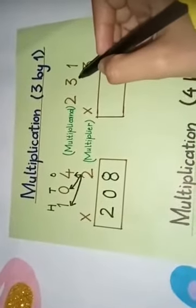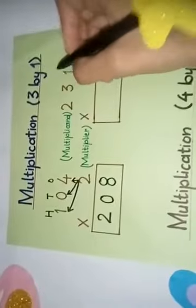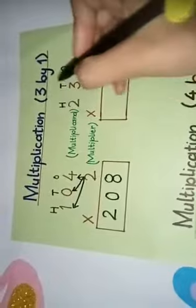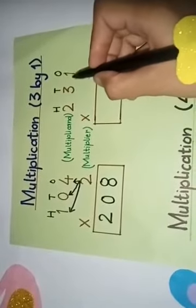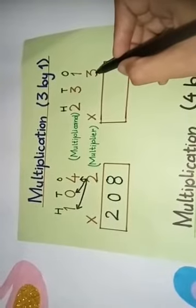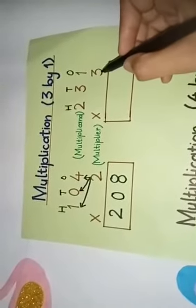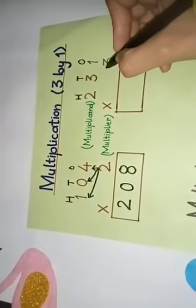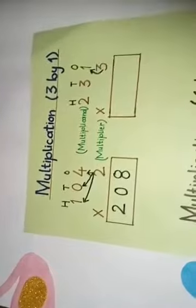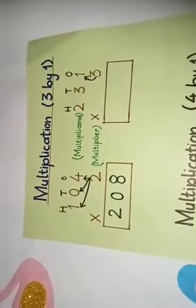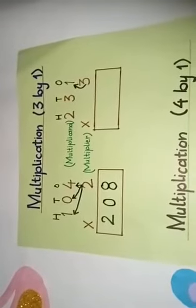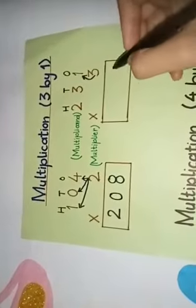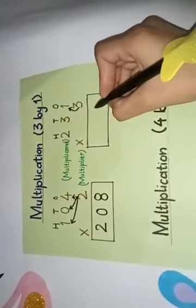Now here is also a 3-digit number as a multiplicand. First one is 1s, 10s, and 100s — so the number is 231. Ab ham ne is ko multiply karna hai 3 se? 3 is the multiplier. First of all, we will multiply 3 by 1. Jab ham kisi bhi number ko 1 ke saath multiply karte hain, hamare paas same number aata hai — very good. 3 ones are 3.